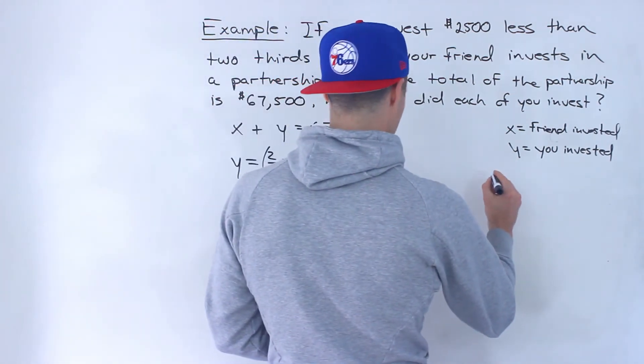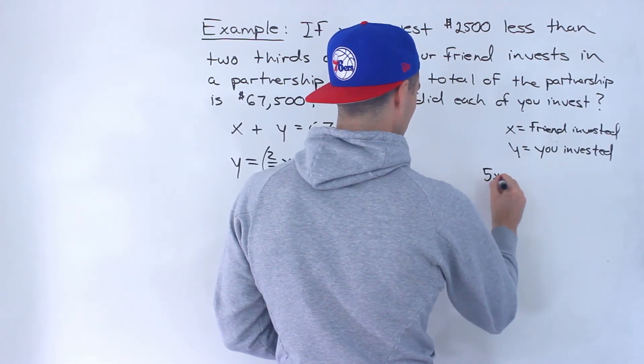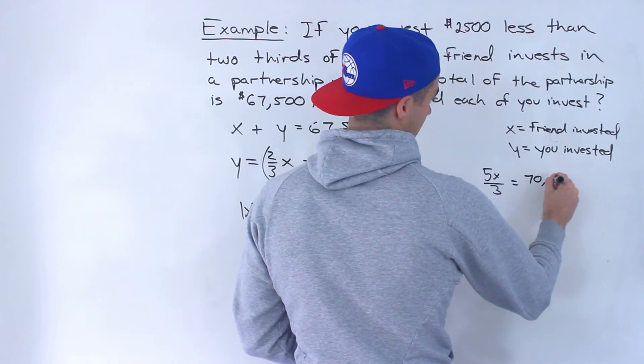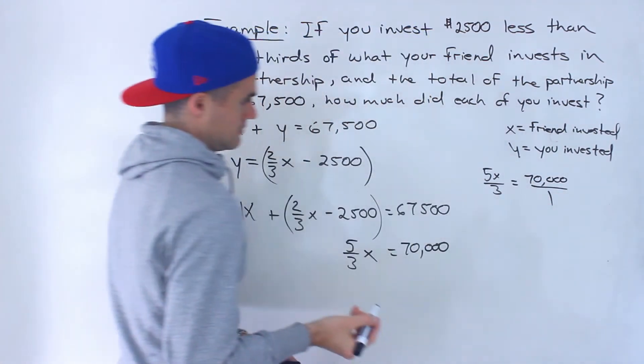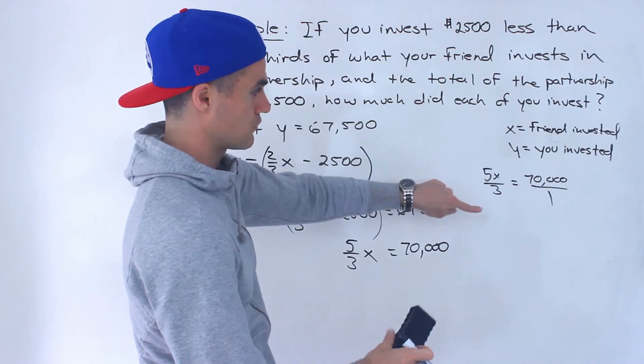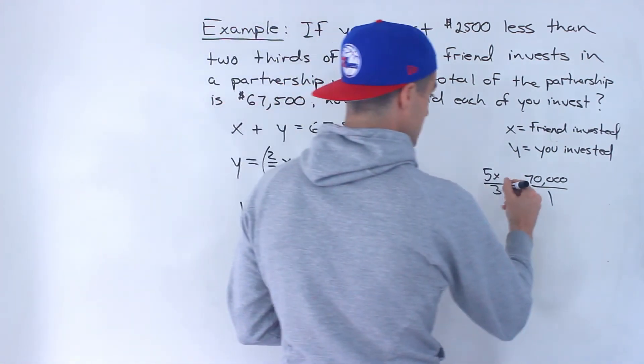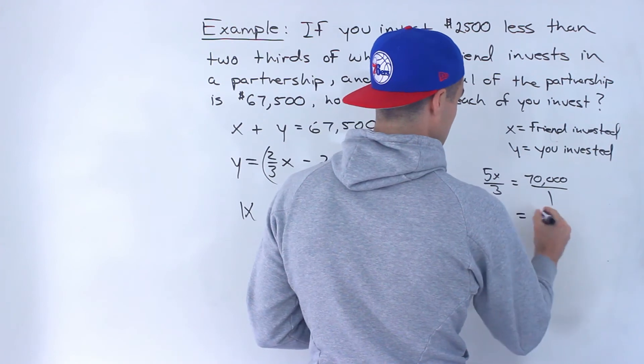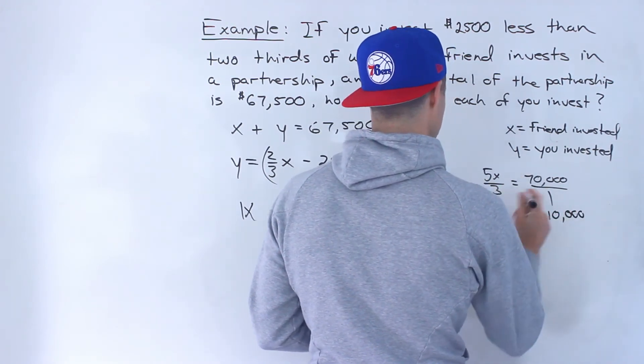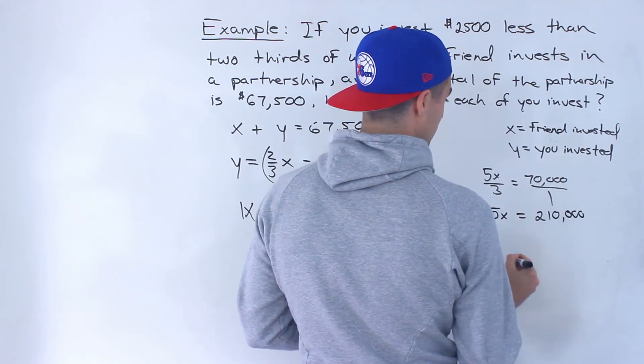Another way you can do this is combine these two into one fraction, put the 70,000 over 1. Now all you could do is cross multiply. So we would have 70,000 times 3, which is 210,000. 5x times 1, which is 5x.